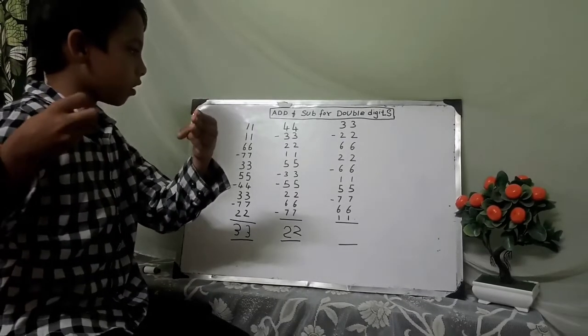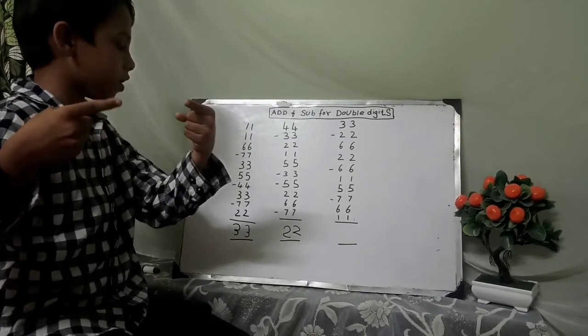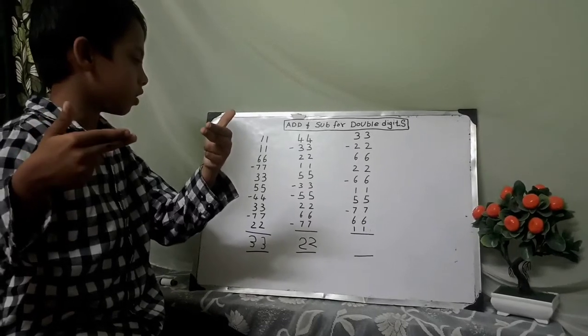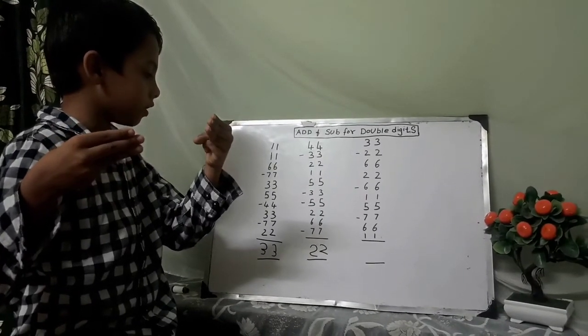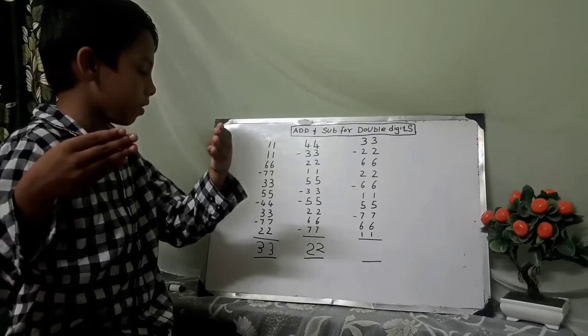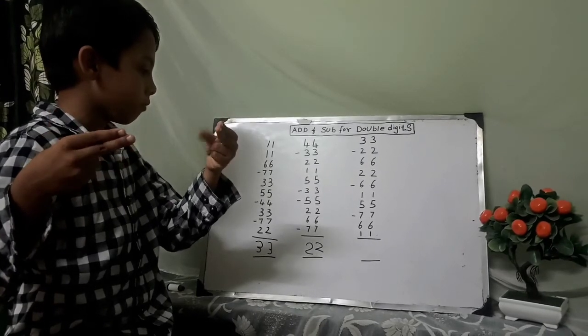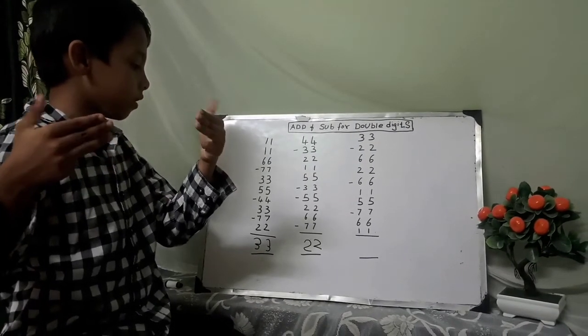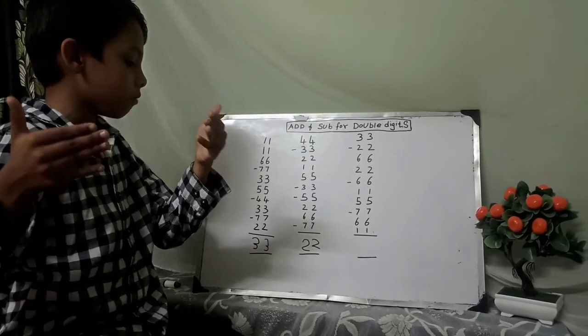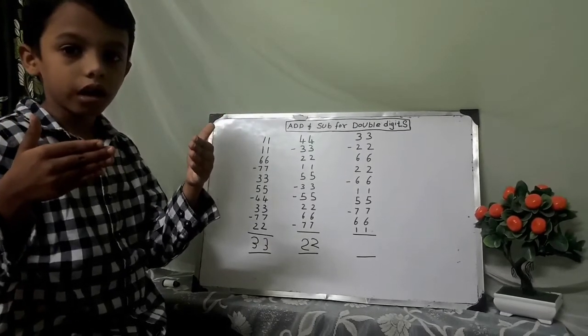Thirty-three minus twenty-two, plus sixty-six, plus twenty-two, minus sixty-six, plus eleven, plus fifty-five, minus seventy-seven, plus sixty-six, plus eleven. The answer is ninety-nine.